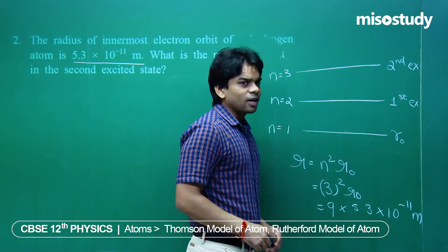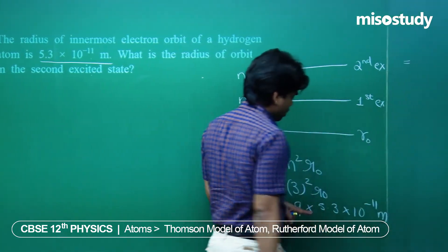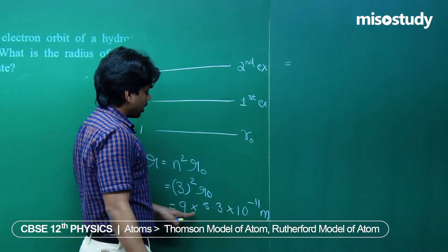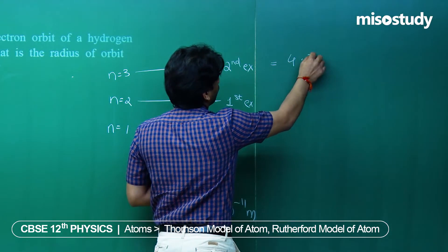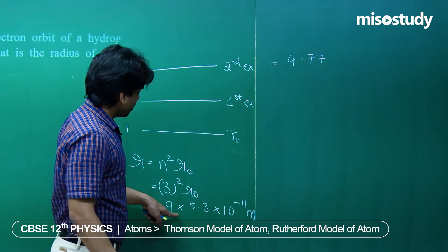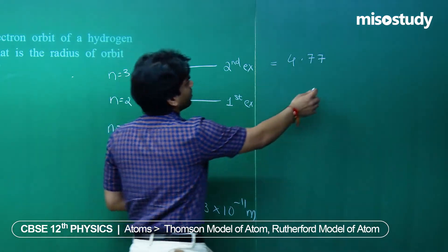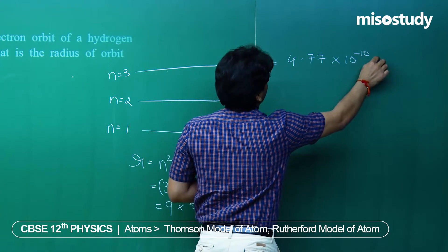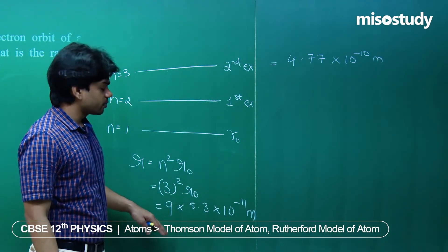Substituting R₀ = 5.3 × 10⁻¹¹ meter into 9 × R₀, the radius in the second excited state comes out to be approximately 4.77 × 10⁻¹⁰ meter.